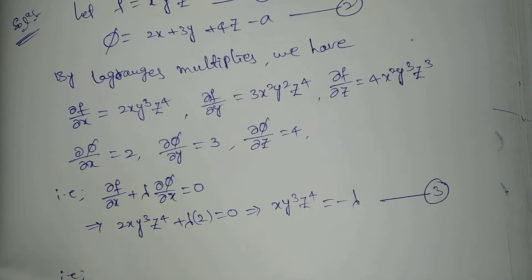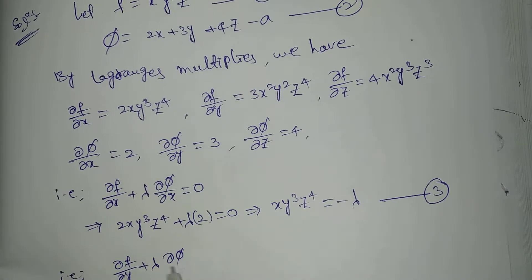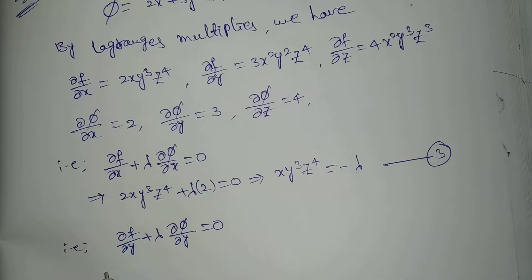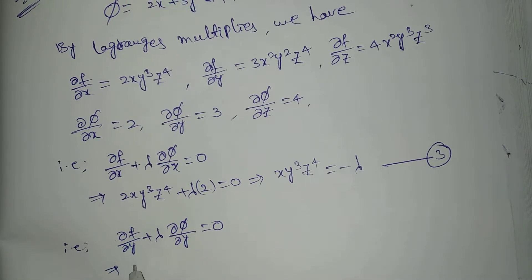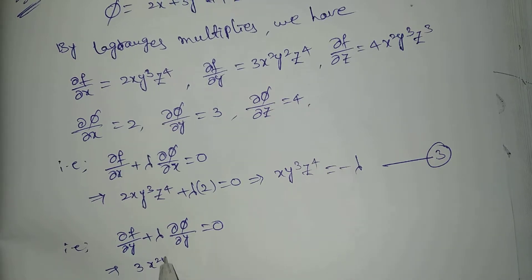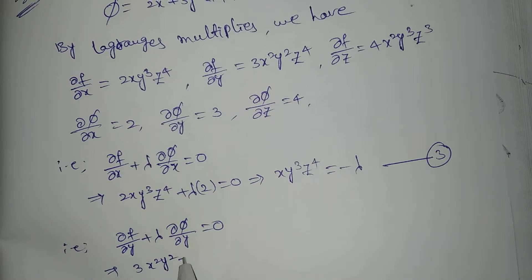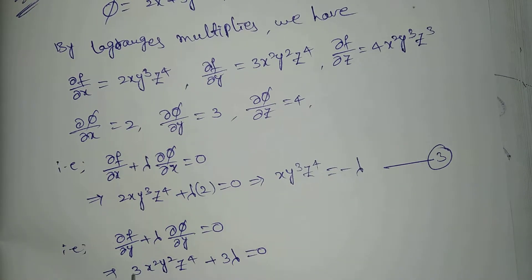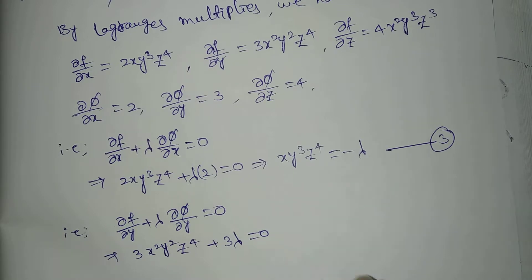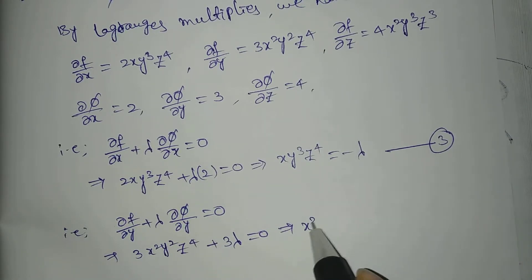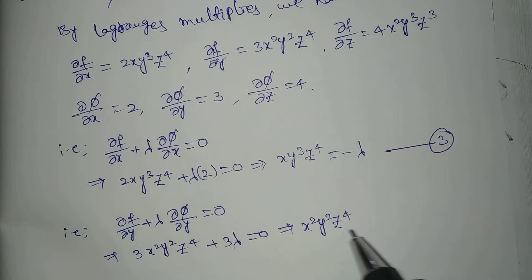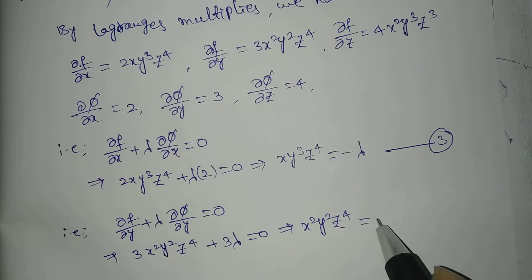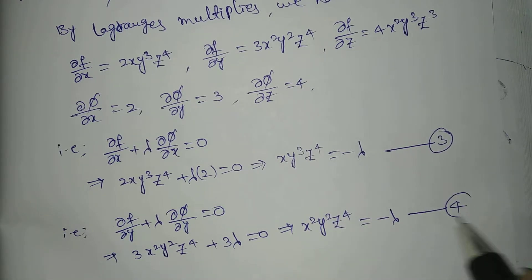And ∂f/∂y plus λ times ∂φ/∂y equals 0. That gives 3x squared y squared z to the power 4 plus 3λ equals 0. Taking 3 as common and moving to the right side, we get x squared y squared z to the power 4 equals minus λ. This is equation number 4.